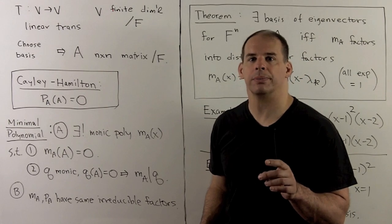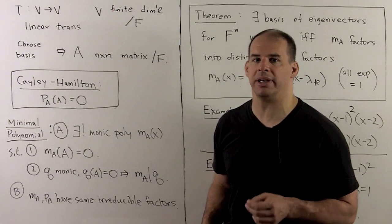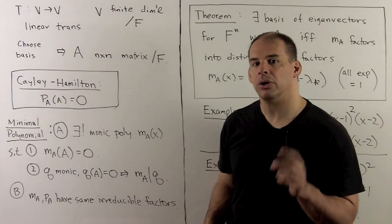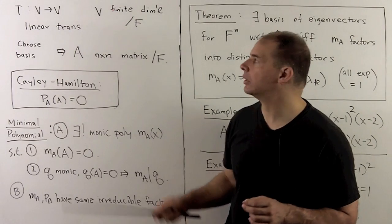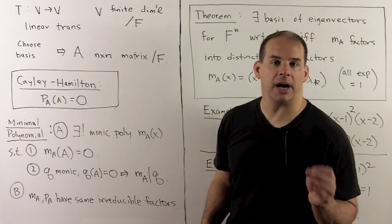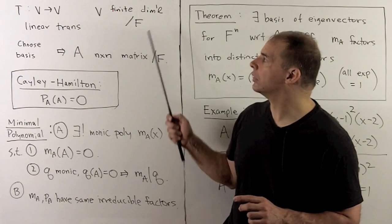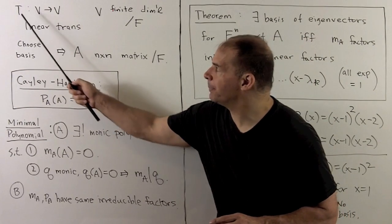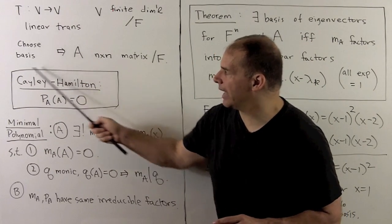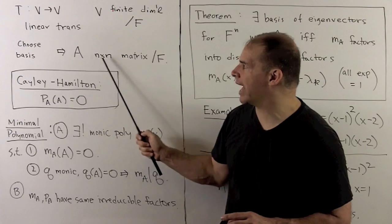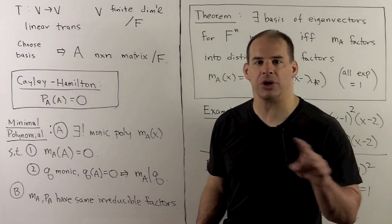Continuing with minimal polynomials, we use them to characterize the matrices that can be put in diagonal form. First, let's recall some definitions. We start with V, a finite dimensional vector space over some field F. We'll have a linear transformation T that carries V to V. When we choose a basis, we get an associated matrix A, which will be an n-by-n matrix with entries in our field.